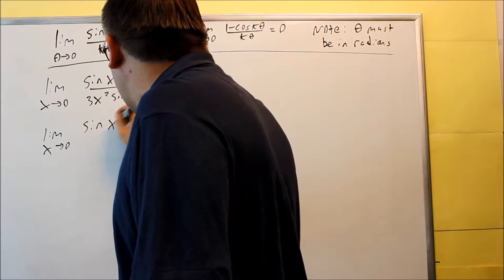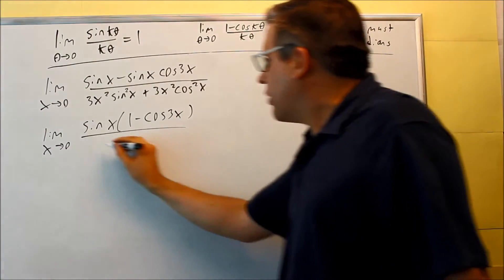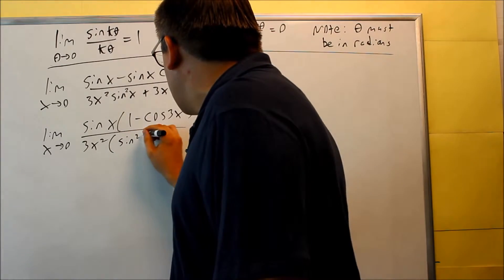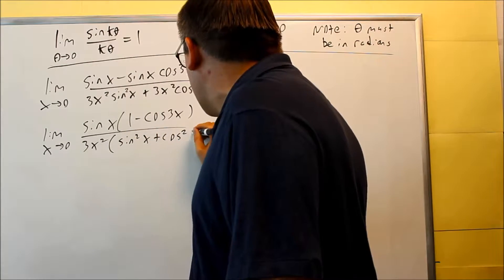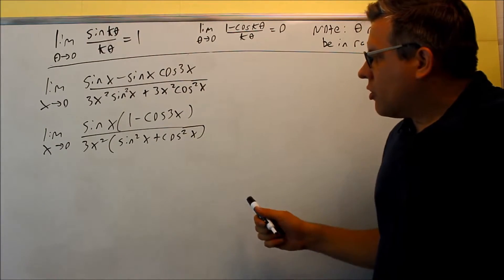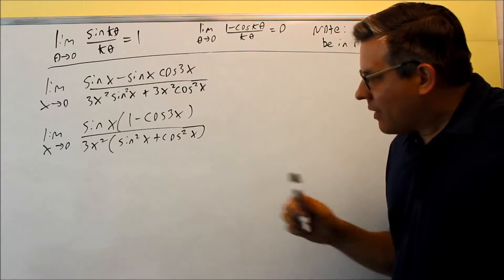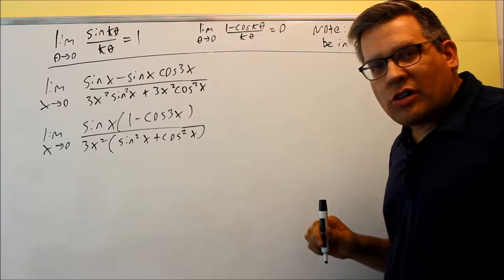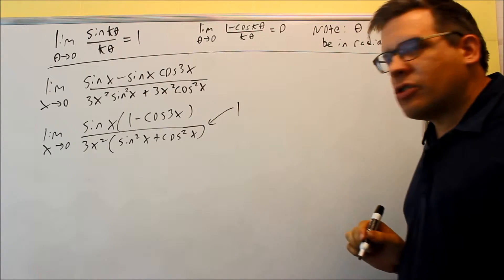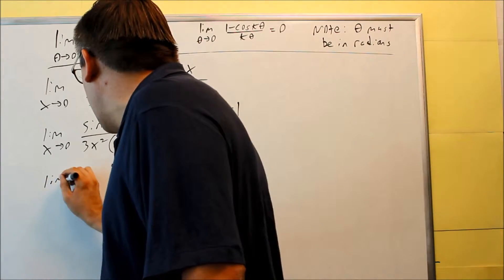So on top we can pull out a sine x and we'll get 1 minus cosine 3x. On the bottom we can pull out a 3x squared and when we pull that one out we're going to get sine squared x plus cosine squared x. And so this right here should be something you should recognize from trig. Sine squared plus cosine squared, that's actually equal to 1. So this whole thing down there, that's going to turn into a 1 because of that special property.